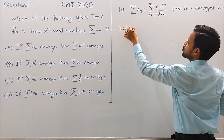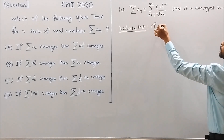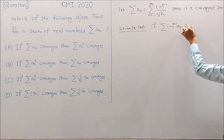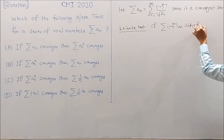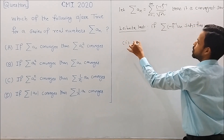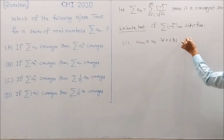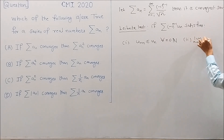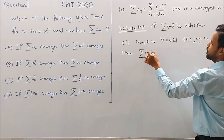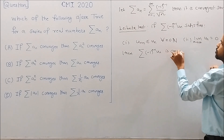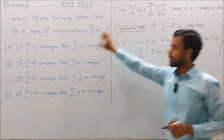This follows from the Leibniz test for alternating series, which states that if the alternating series of minus 1 to the power n minus 1 times un satisfies un+1 less than or equal to un for every n in the natural numbers, and the limit as n tends to infinity of un equals 0, then the alternating series is convergent. We will use this test to show that our series An is convergent.